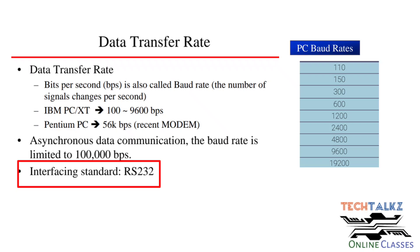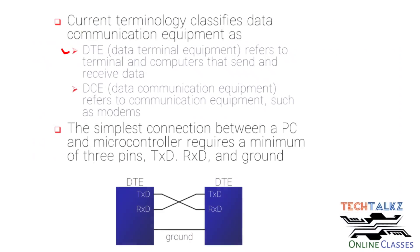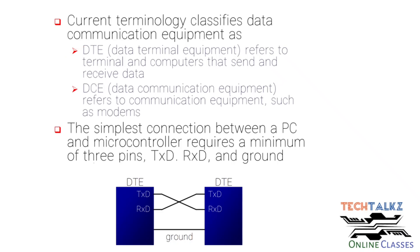The interfacing standard is RS-232, using a DB9 connector with 9 pins: Data Carrier Detect (DCD), Received Data, Transmitted Data, Data Terminal Ready, Signal Ground, Data Set Ready, Request to Send, Clear to Send, and Ring Indicator. DTR refers to Data Terminal Equipment, such as terminals and computers that send and receive data, including microcontrollers.